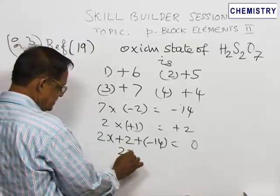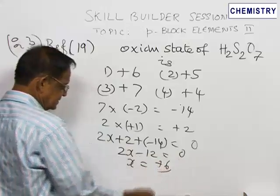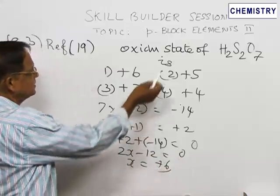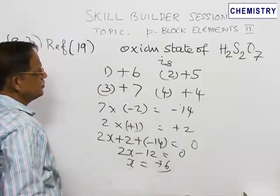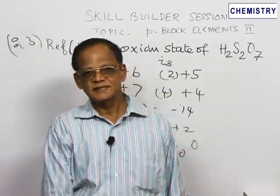So, 2x minus 12 is equal to 0, x equal to plus 6. So, the oxidation number of oleum or fuming sulphuric acid is plus 6. That is the correct answer.